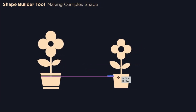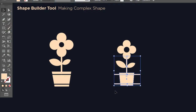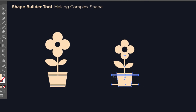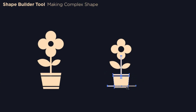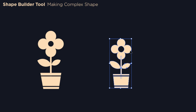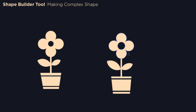Now make a thin horizontal rectangle here, then hold Alt and drag it down. Select the two rectangles with the pot and the flower stem, then select the shape builder and hold Alt and drag over the rectangles to remove them. You can also merge these shapes together.